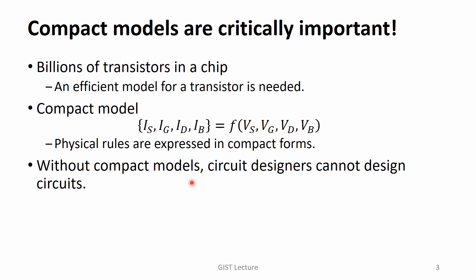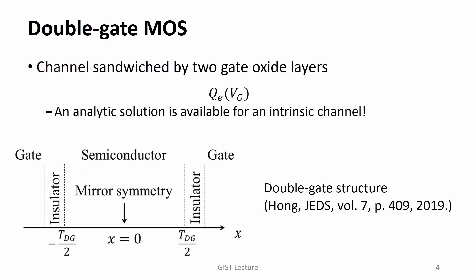Our following discussion is not for circuit designers — it's for device engineers. Let's get started with a very successful model for the double-gate MOS structure. A silicon channel is sandwiched by two gate oxide layers. Even a FinFET or a nanosheet MOSFET has a channel cross-section quite similar to the double-gate MOS.